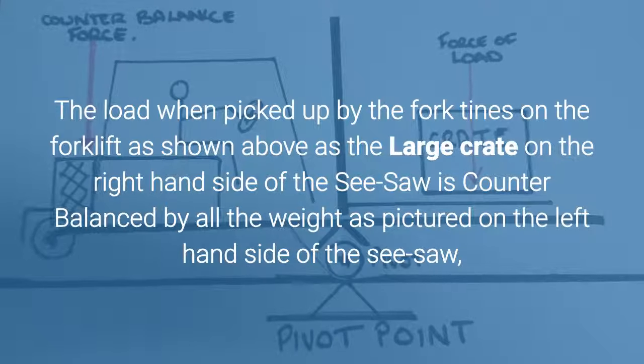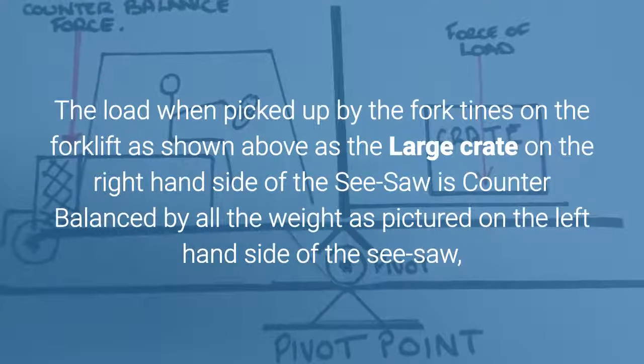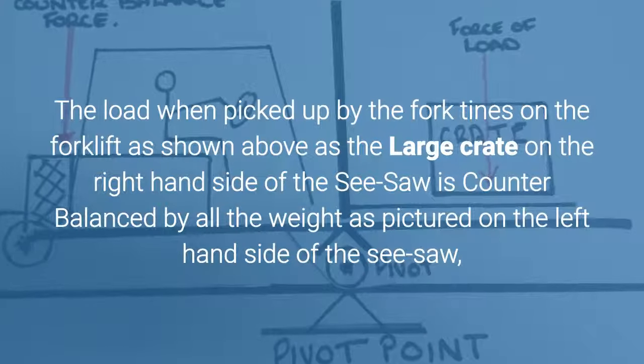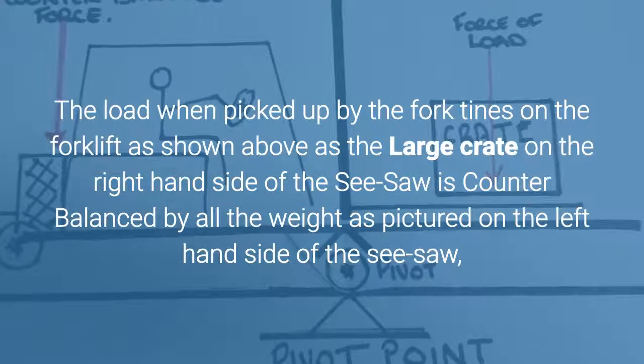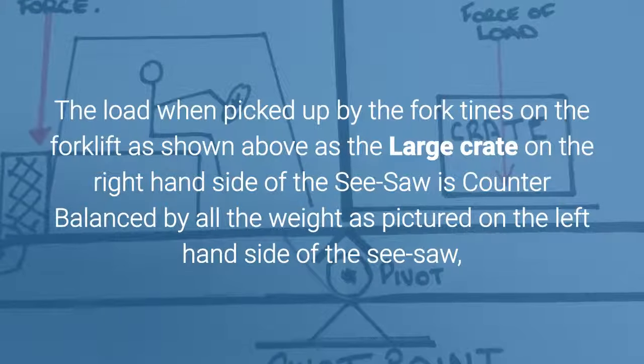The load when picked up by the fork tines on the forklift, as shown above as the large crate on the right hand side of the seesaw, is counterbalanced by all the weight as pictured on the left hand side of the seesaw.